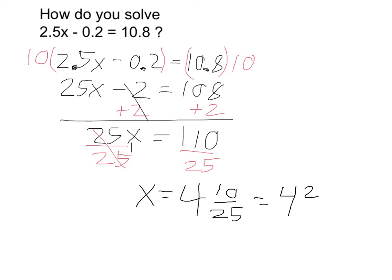So it's 4 and two-fifths. But really, since the original equation contained decimals, it would be good to write this in its decimal equivalent, so that would be 4.4. 2-fifths is equal to 4 tenths, which is going to give us 0.4. So final answer, x is equal to 4.4.